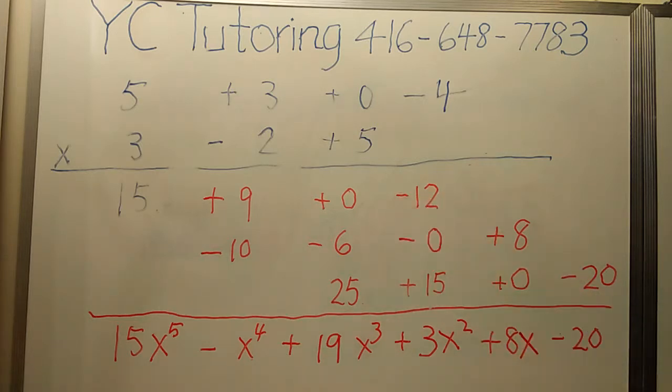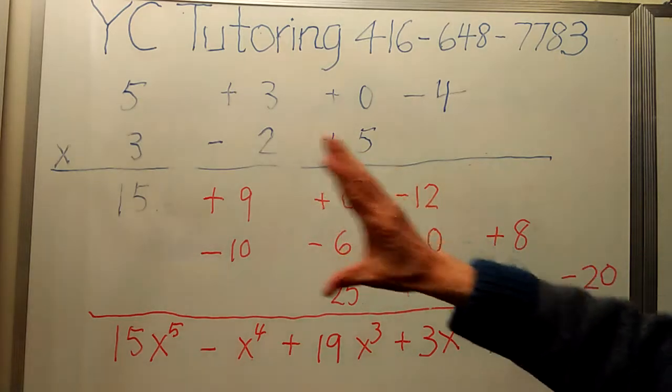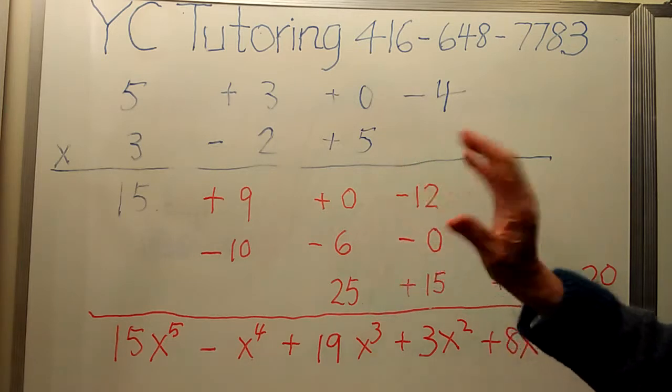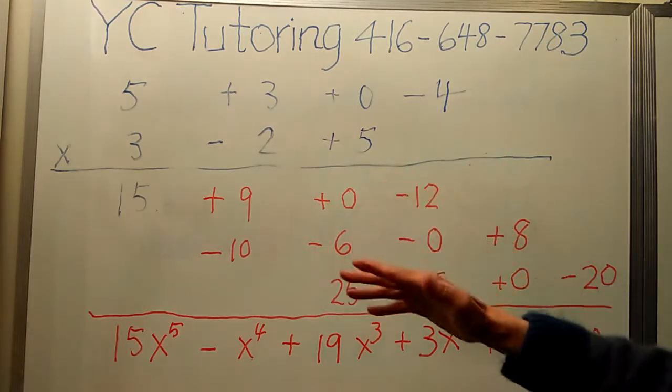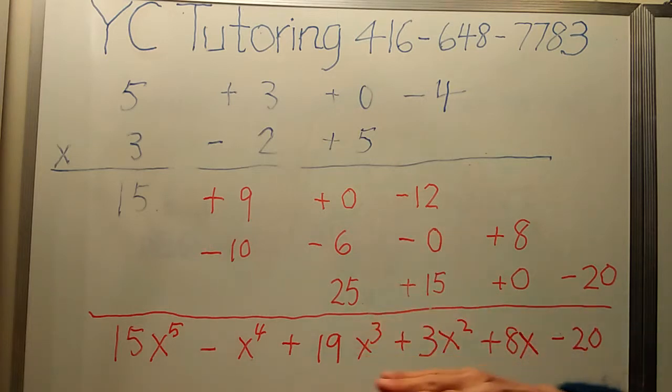So this method, you don't write the x, but write all the coefficients and do the usual way, the multiplication. The final result, then you put x back. This is called method of detached coefficients.